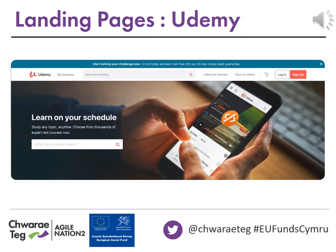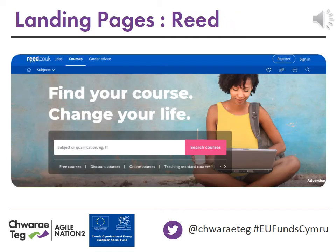Udemy is very similar to the two previous ones — it has a search box and a categories tab at the top. The recruitment website Reed also has a courses section similar to others. So just by looking at these four, you can see that different online learning sites have very similar layouts, and once you've explored one or two, you'll begin to know what to look out for and how to search for things. There is more detailed information on this in the guidance document download.